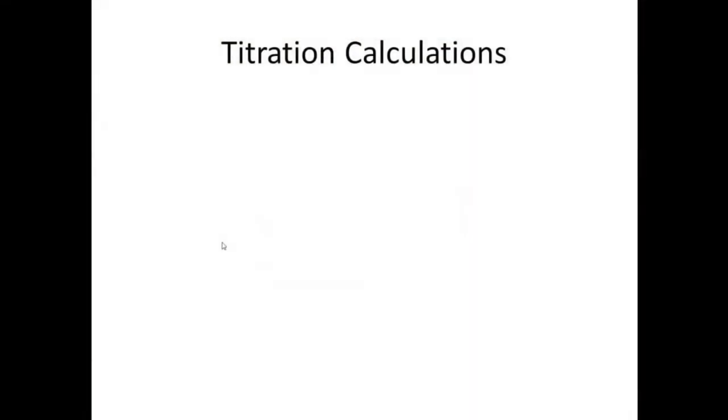So we're going to do the calculation for titrations. The formula you're going to use is M1V1 equals M2V2. So in doing a titration, you're going to set up one side of the equation and solve for the other by plugging in what you know. So that's 0.1 molar HCl.